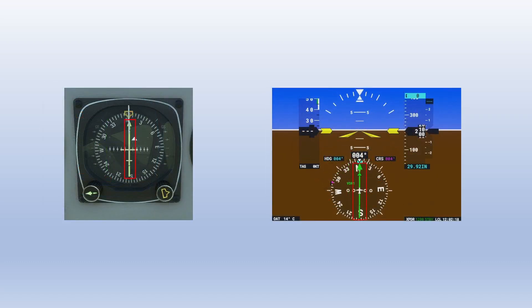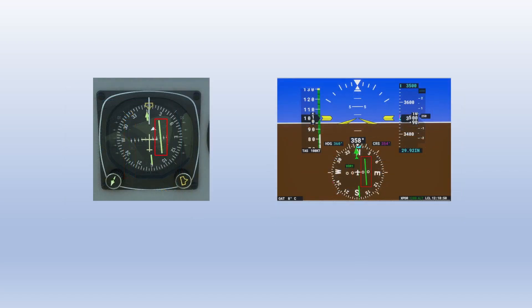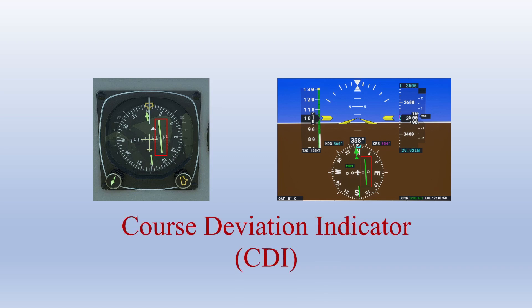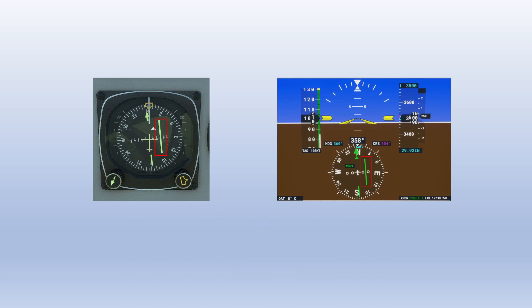The arrow in the center of the instrument is used to display the NAV course of choice. In all aircraft it can display VOR or ILS data, and in most aircraft in Flight Simulator it can be switched to display GPS course information. In the center of the arrow is a portion that moves — this is your course deviation indicator, or CDI — and it moves left or right to show your position relative to the selected course.